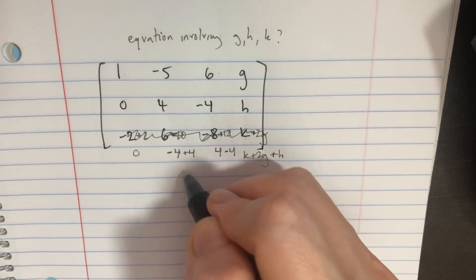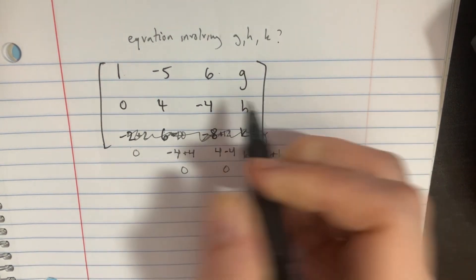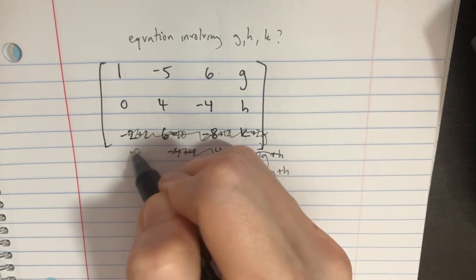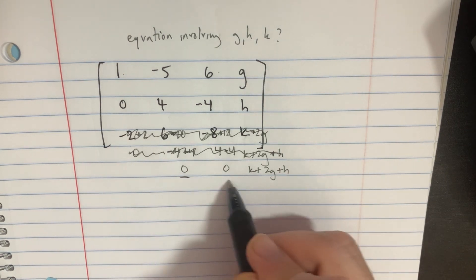And so here at the bottom, you'd get a 0 and a 0, and then you have the k plus 2g plus h, and you can get rid of this. And so you kind of have these three rows in your matrix, so this is the third row.